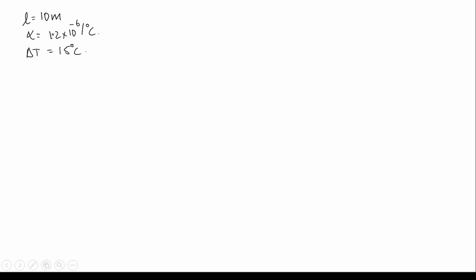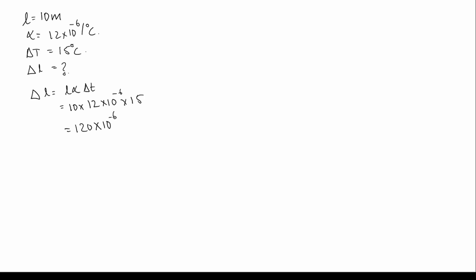The gap to be provided, delta L, is calculated as delta L equals L alpha delta T. That gives us 10 into 12 into 10 to the power of minus 6 into 15, which equals 120 into 10 to the power of minus 6 into 15. So delta L is equal to 0.018 meters. The answer is option A.